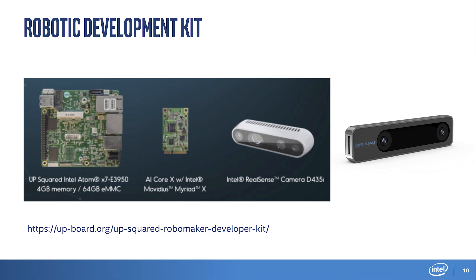This is a very common configuration where one would use the camera with a host and also some kind of accelerator for computer vision or AI workloads — in this case the Myriad X, which is also in the Neural Compute Stick. I argue that to get the most accurate and robust SLAM, one would also add a T265, as you will see in the following experiments.